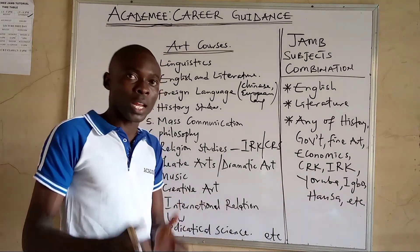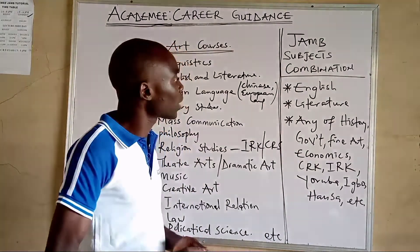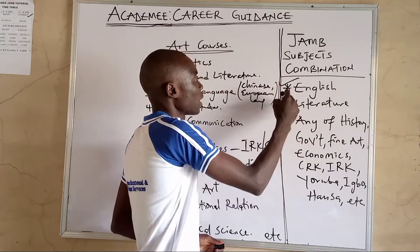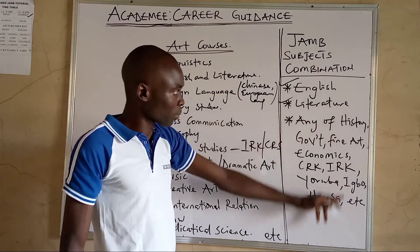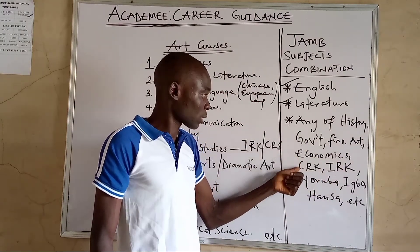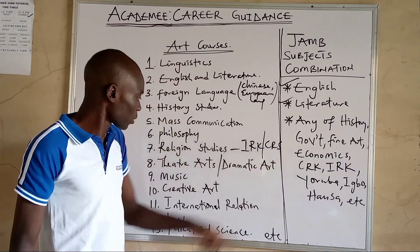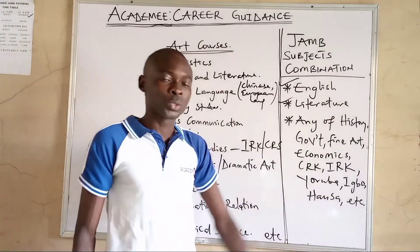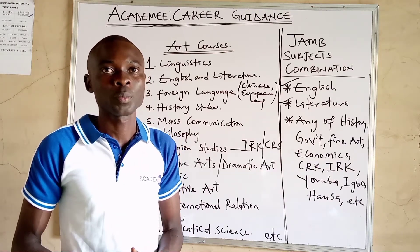When you choose any of these as an art student, there are JAMB subject combinations when you are filling your JAMB form. The compulsory subject in your combination is English and literature. Outside English and literature, you can make other choices from the list — either history, government, economics, CRS, IRK, or vernacular languages like Yoruba and Igbo. We hope this video has helped you make a career choice in the arts discipline. Thank you.